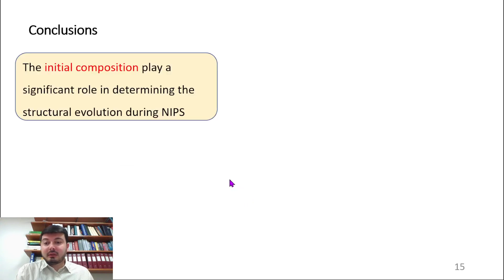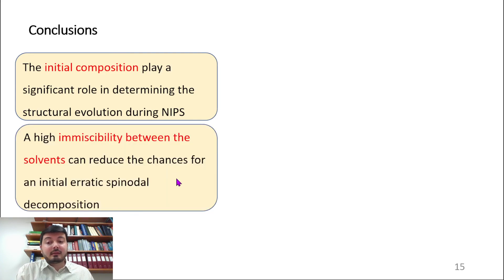Basically we learned that initial composition really matters. Being in regime 1, 2, or 3 could have different effects on the microstructural evolution. The selection of solvents is important. Having higher interaction between the two solvents or higher immiscibility might reduce the chance of forming porous particles or particles with asymmetric pores.